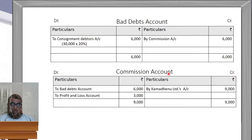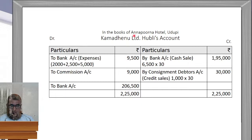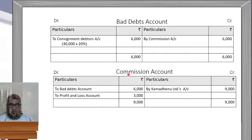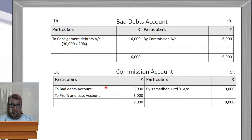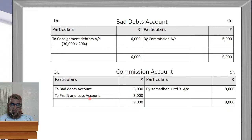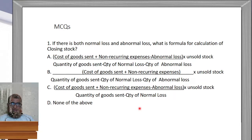Now we prepare the Commission Account. Total commission from Kamadenu Limited = Rs. 9,000 (credit side). Against this, bad debts of Rs. 6,000 are debited: 'By Bad Debts Account Rs. 6,000.' The net balance is Rs. 9,000 − Rs. 6,000 = Rs. 3,000, which is the actual net commission earned, transferred to Profit and Loss Account. Both sides of the commission account total Rs. 9,000.